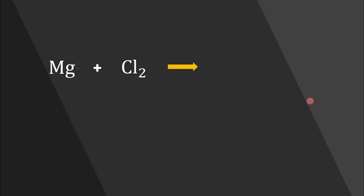Now as an example, let's consider the equation of the reaction between magnesium and chlorine to produce magnesium chloride. To balance a chemical equation, we count atoms of each element on both the left-hand side and the right-hand side. Generally, the left-hand side contains the reactants and the right-hand side contains the products. In the reactant side we have one magnesium atom and two chlorine atoms.